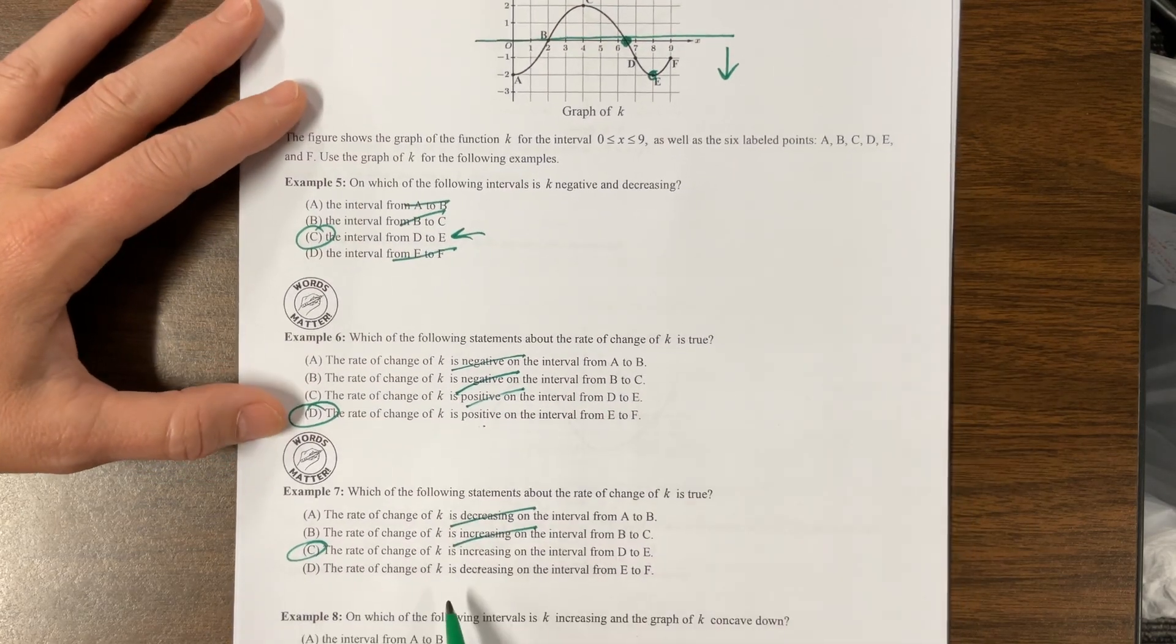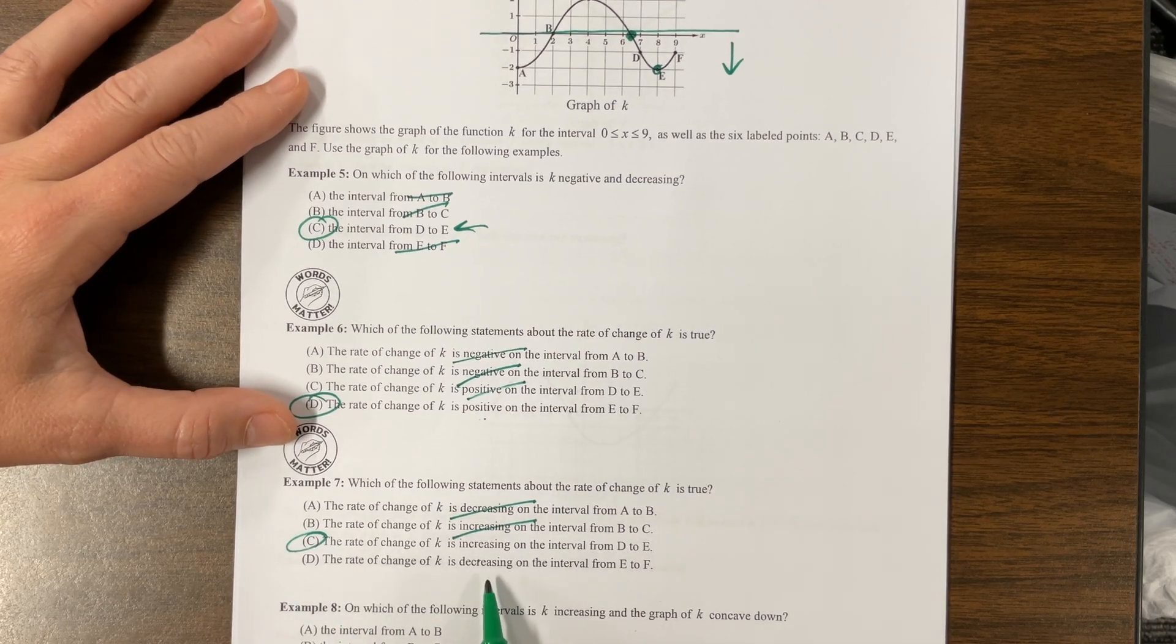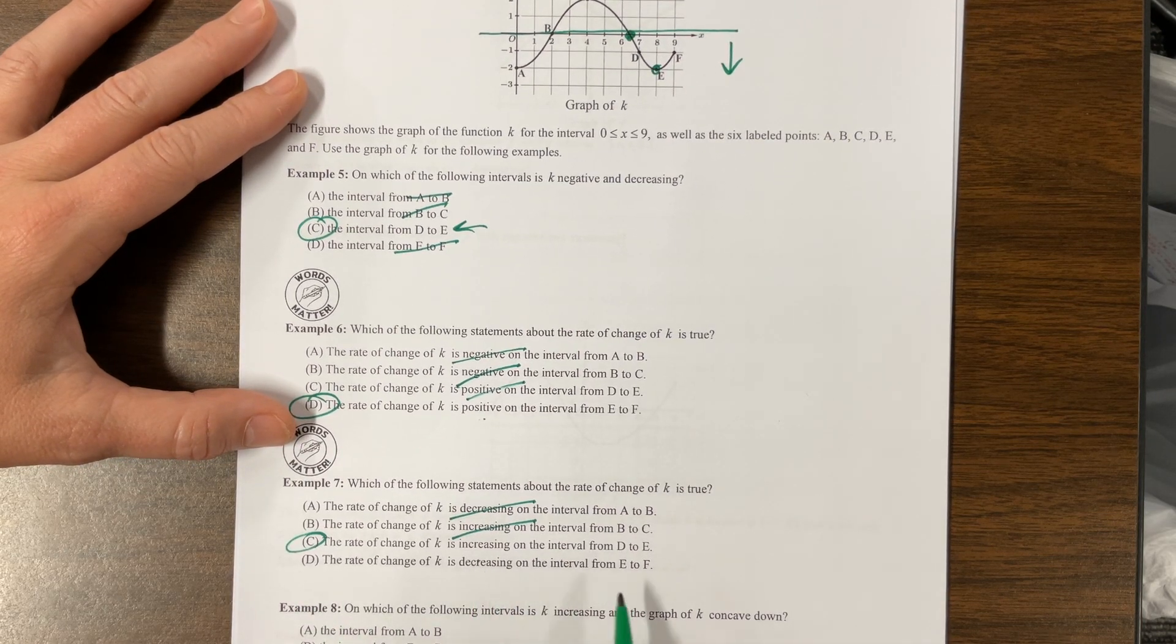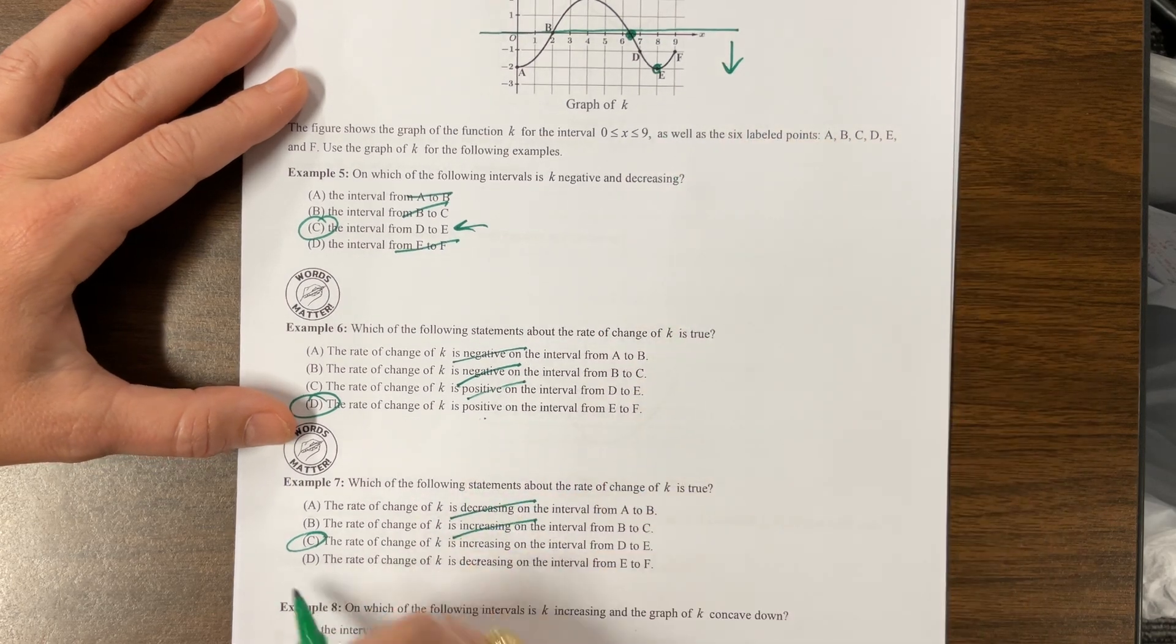The rate of change is decreasing. That means concave down on the interval E to F. No, it's concave up. So we were correct.